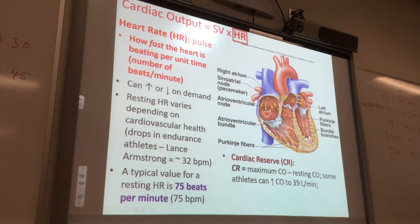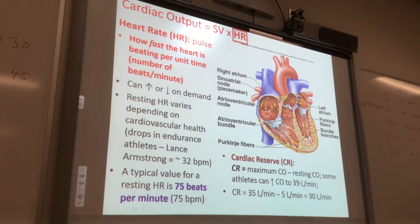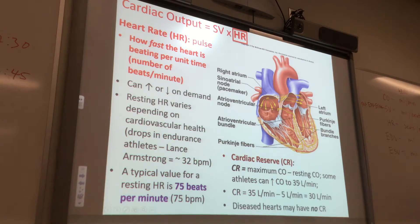So if maximum cardiac output is 35 liters per minute and resting is 5 liters per minute, the cardiac reserve is 30 liters per minute. Some athletes have 30 liters per minute just in reserve. Most of us don't. That's for super athletes — triathletes, cyclists, swimmers. If you have a diseased heart, you might not have any cardiac reserve, so you can't exercise.